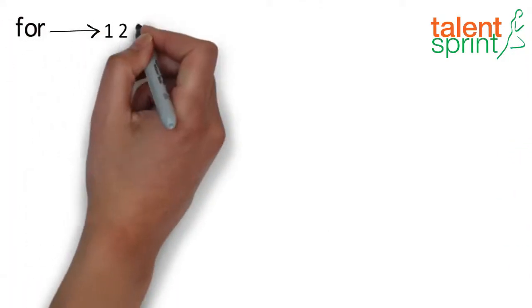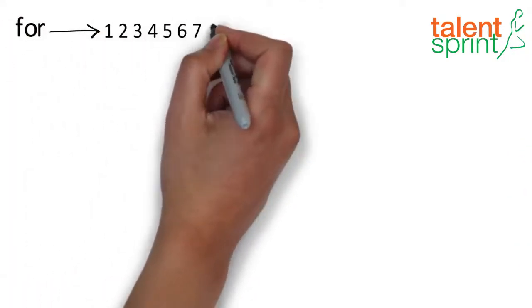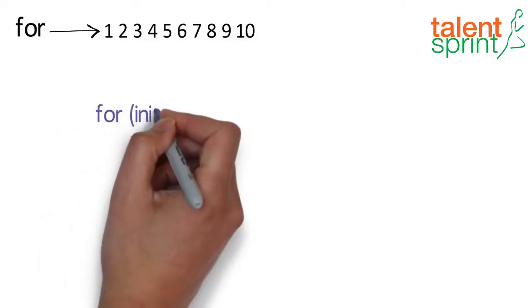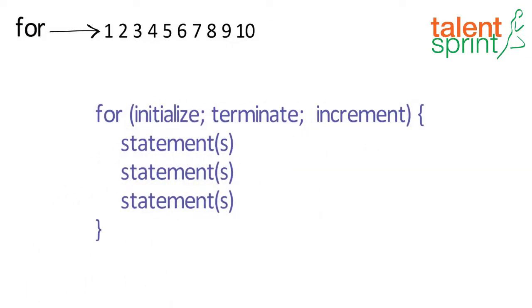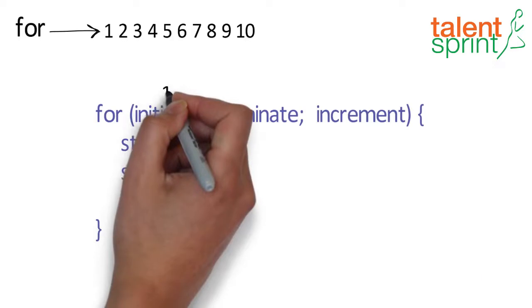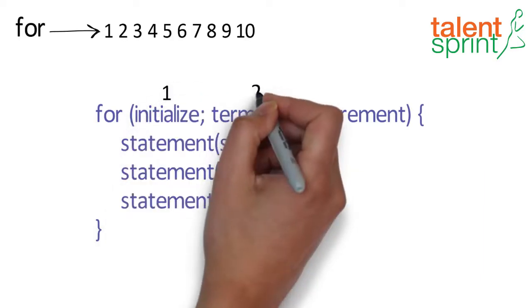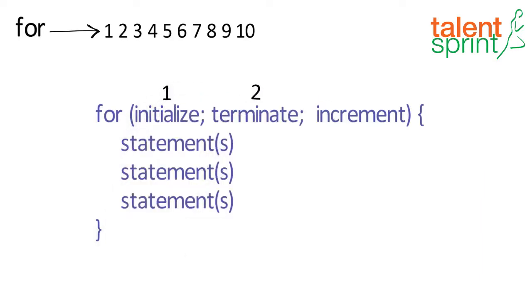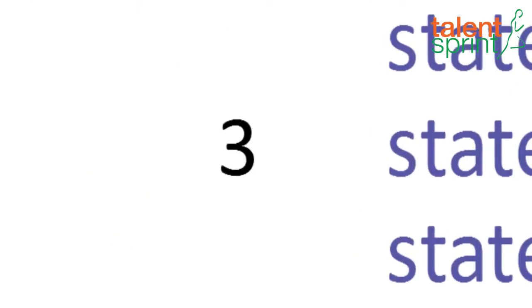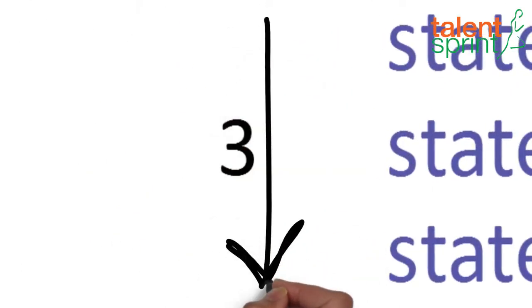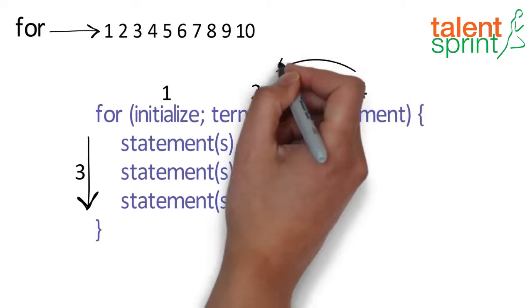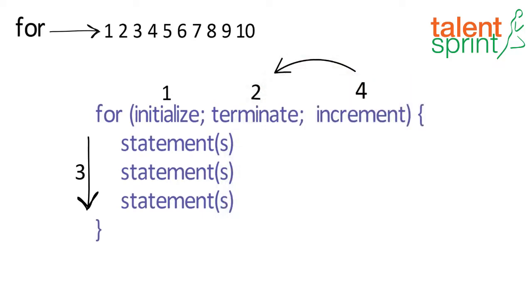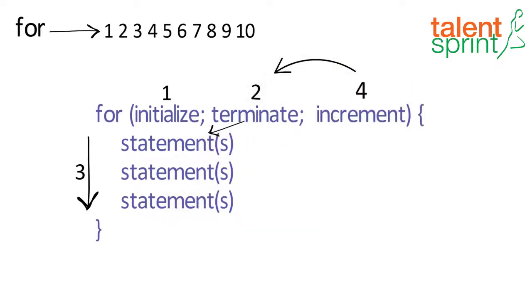The for statement provides a compact way to iterate over a range of values. The general form of the for statement can be expressed as shown in the flow: we first do the initialization, check the condition, execute the statements of the loop, and once all the statements are executed, increment the loop variable.